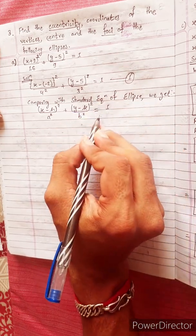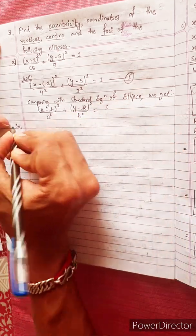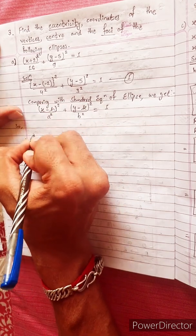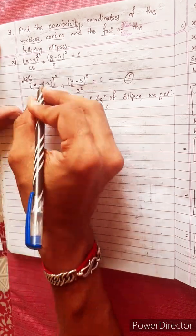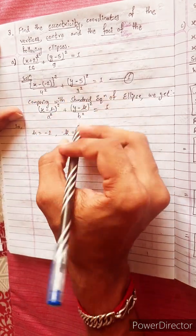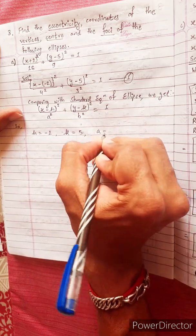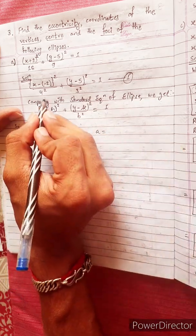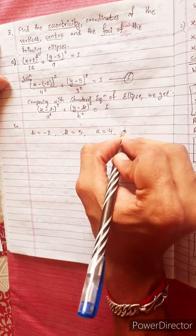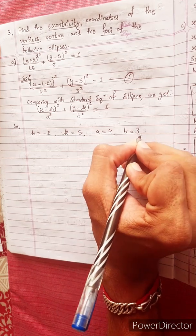Comparing, we get: h equals minus 2, k equals 5. A squared equals 4 squared, so a equals 4. B equals 3.